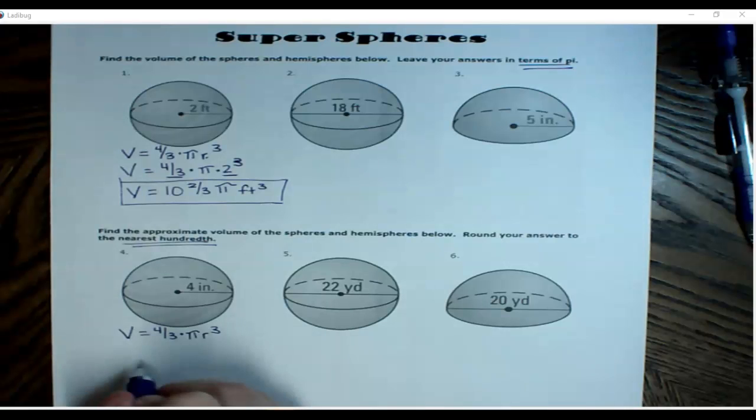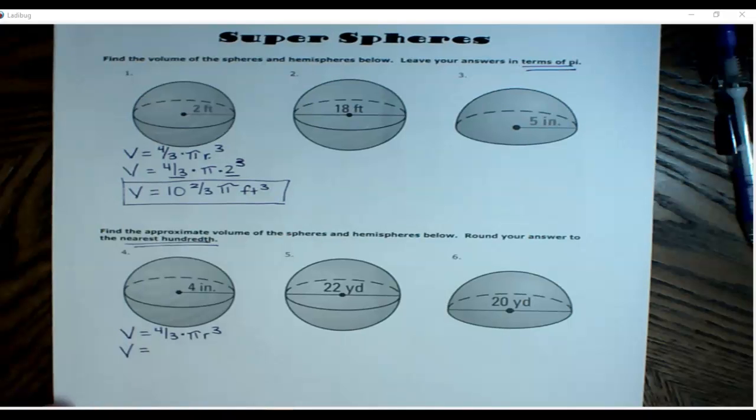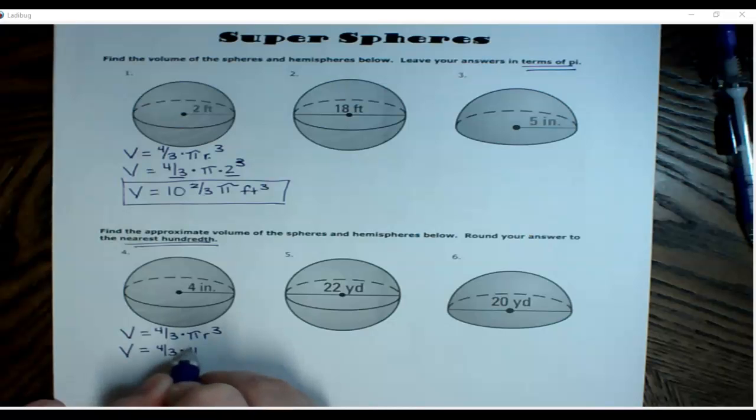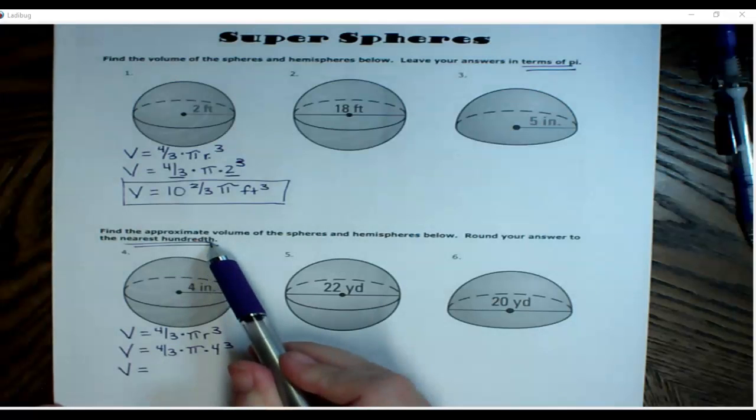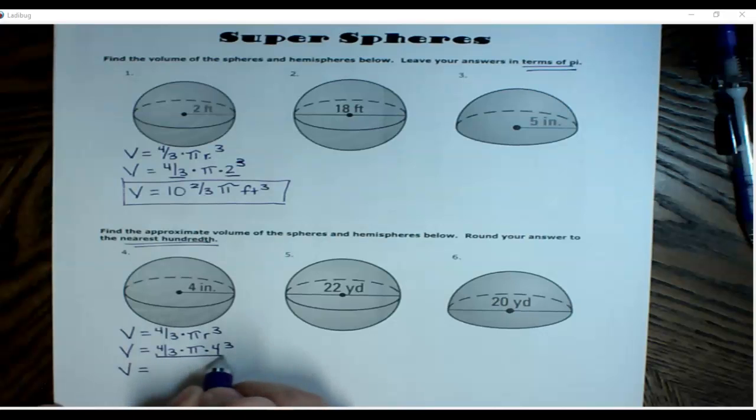We're ready to substitute in. I don't know the volume, so that variable stays. Four-third times pi times, what's our radius? Yes, our radius is four, so four cubed. Because I want a final answer that I'm going to estimate, I'm going to round it to the nearest hundredth, I need to calculate all of this. Four-thirds times pi times four cubed.